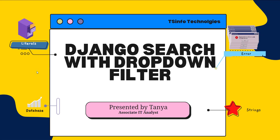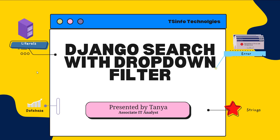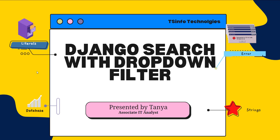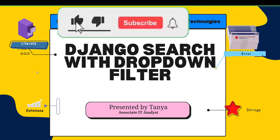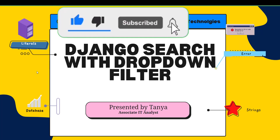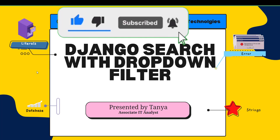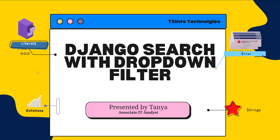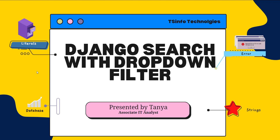Hello everyone, welcome to the channel. Today in this video we are going to learn how to search with a dropdown filter in Django. Before we proceed, let's first understand what we mean by the search box. A search box allows the user to search for something specified by entering or selecting it from the dropdown menu.